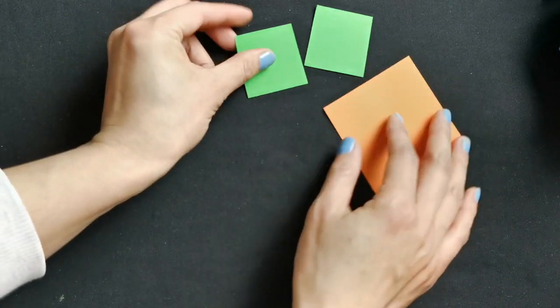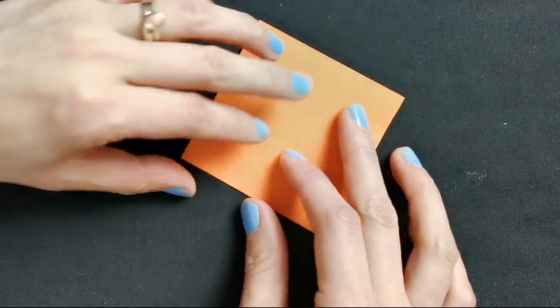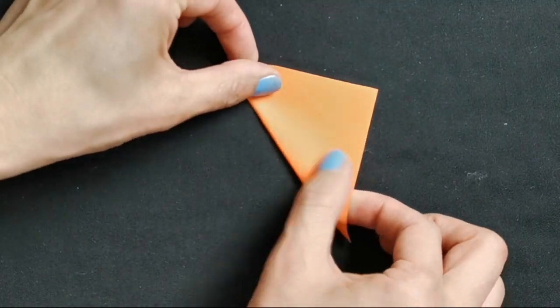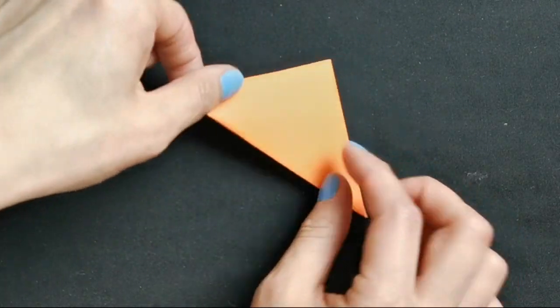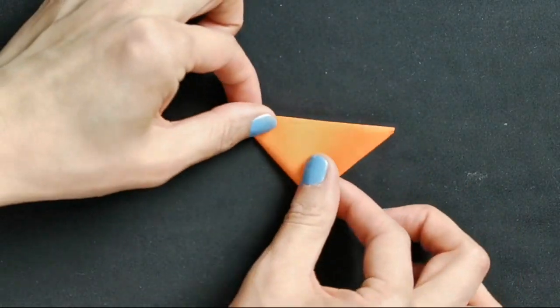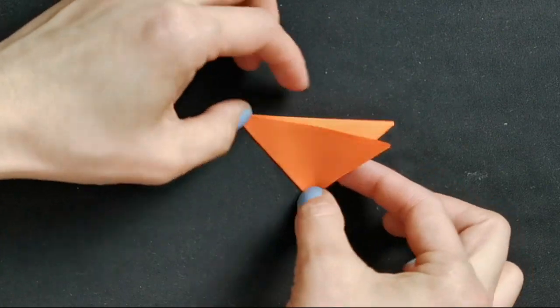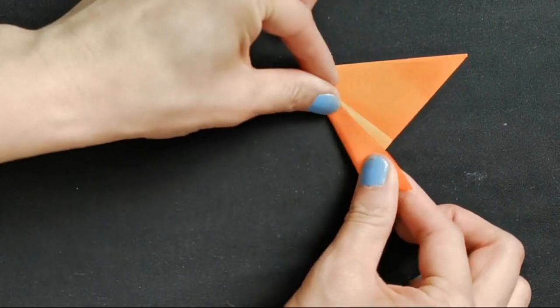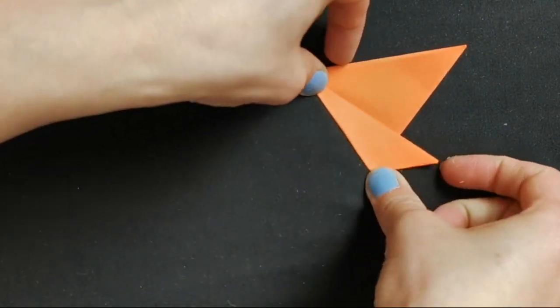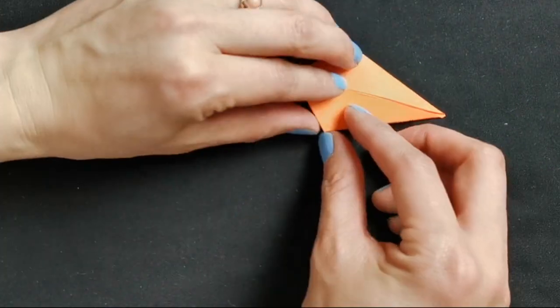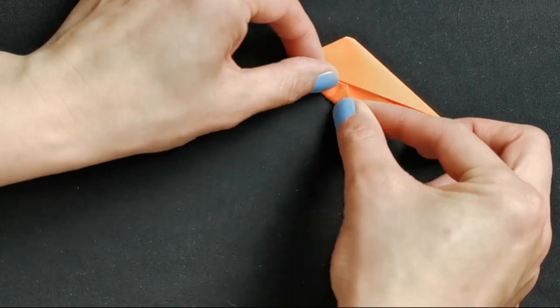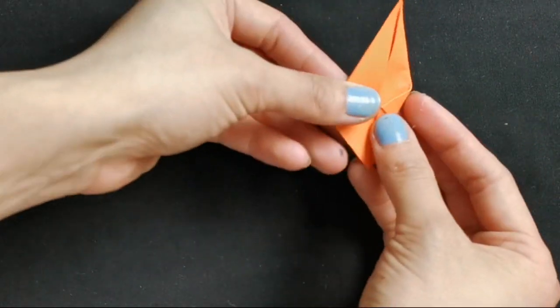Then going to make some carrots to put in the basket. Okay, now start with the body. I fold in half to triangle, the middle, and then in half again, and then fold one side to the middle, another side to the middle, another side.